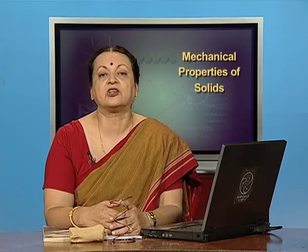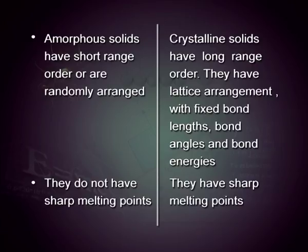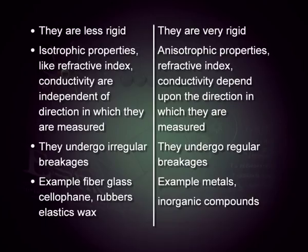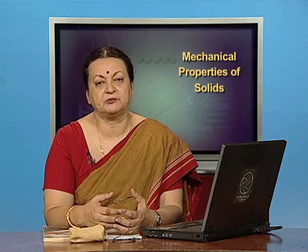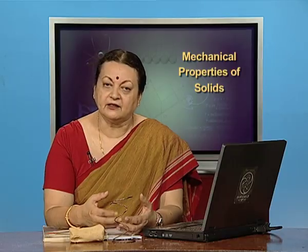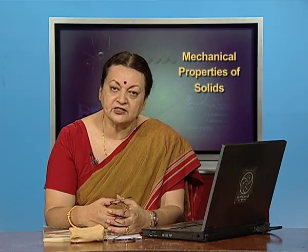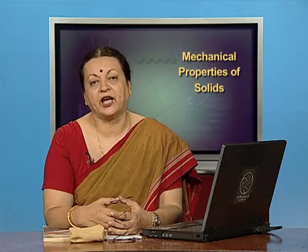On the other hand, in a crystalline structure, the atoms and molecules have a long range order. You have a lattice arrangement in which the bond lengths, bond angles and energies are almost fixed. That means such materials have a fixed melting point. They also have a rigid structure and when you break them, they break with sharp cleavages and edges. Amorphous substances you will recognize as polyethylene, plastics, wax — and on the other hand, the crystalline structure would be with metals or inorganic compounds.